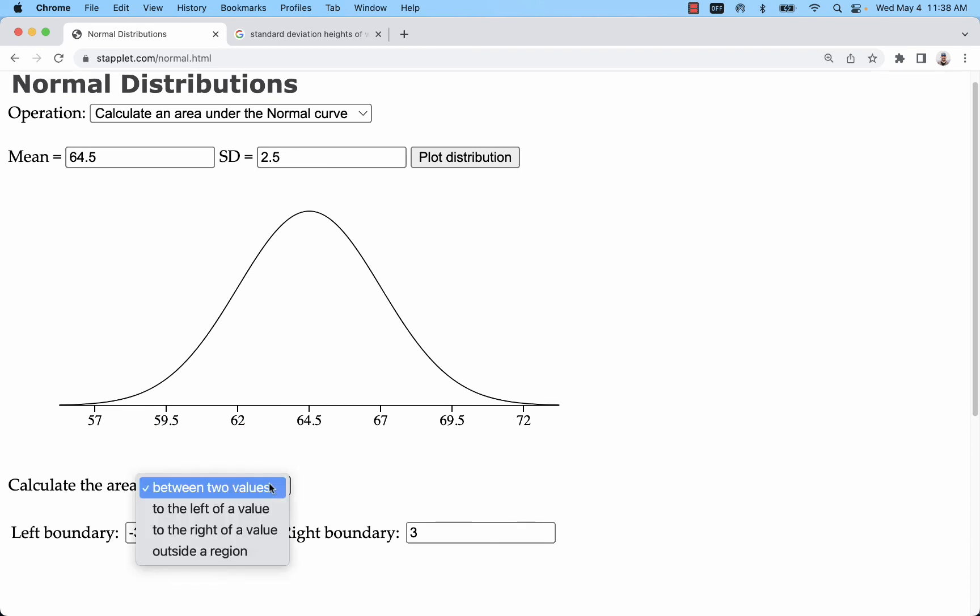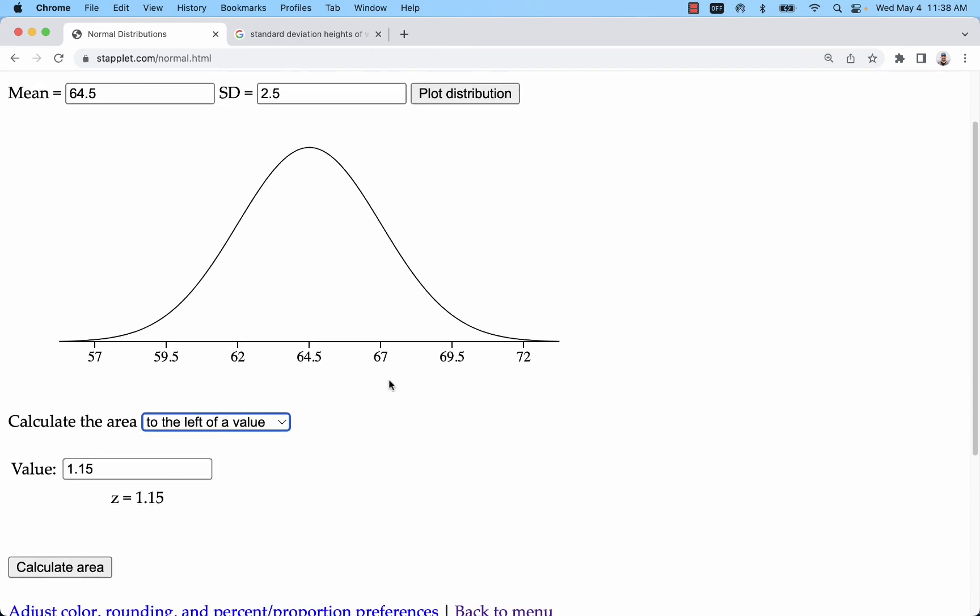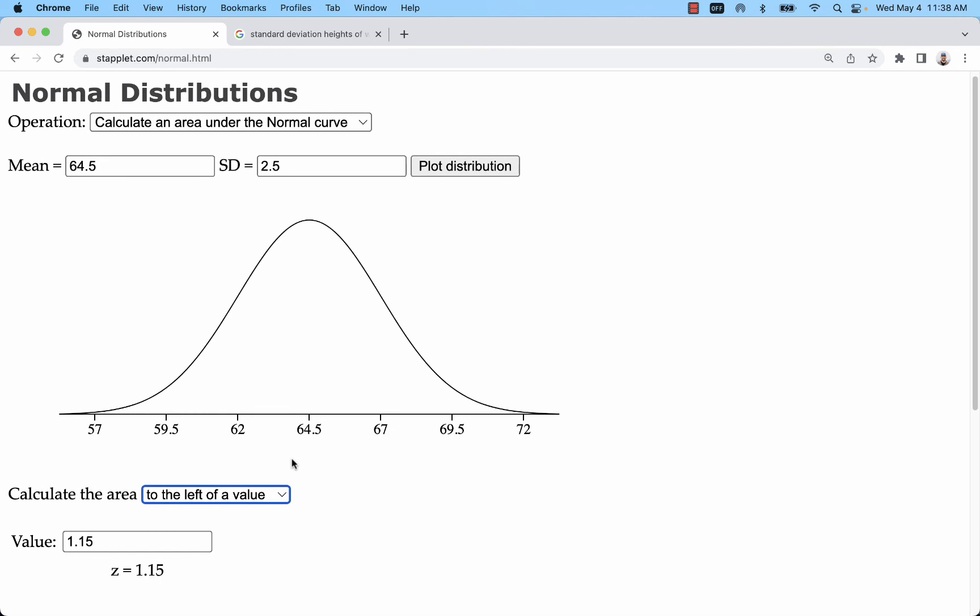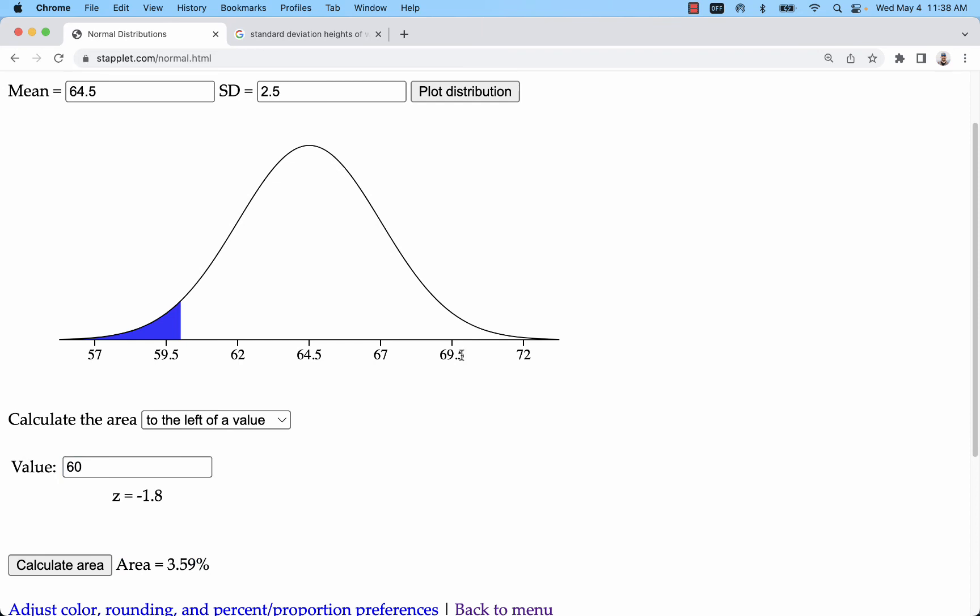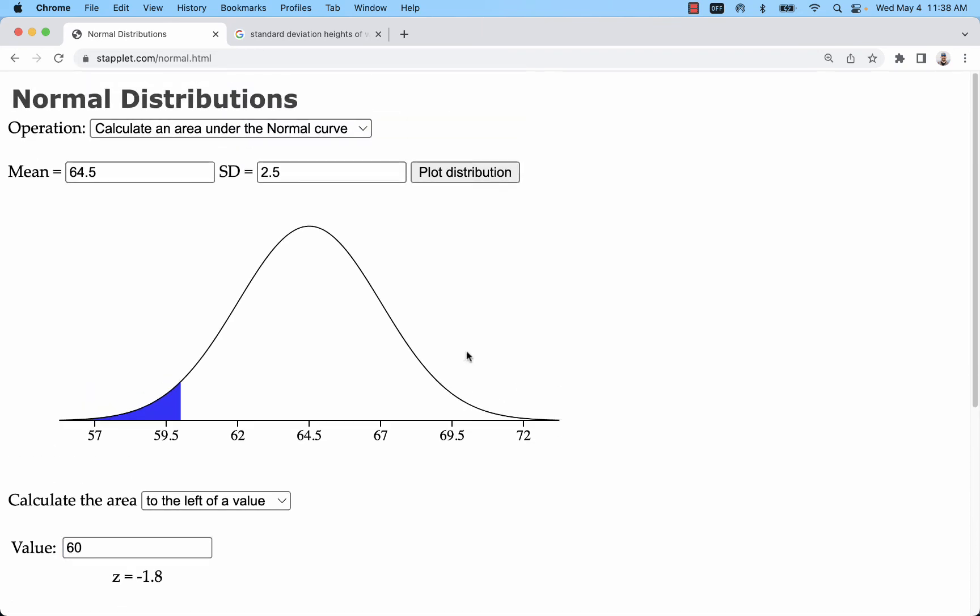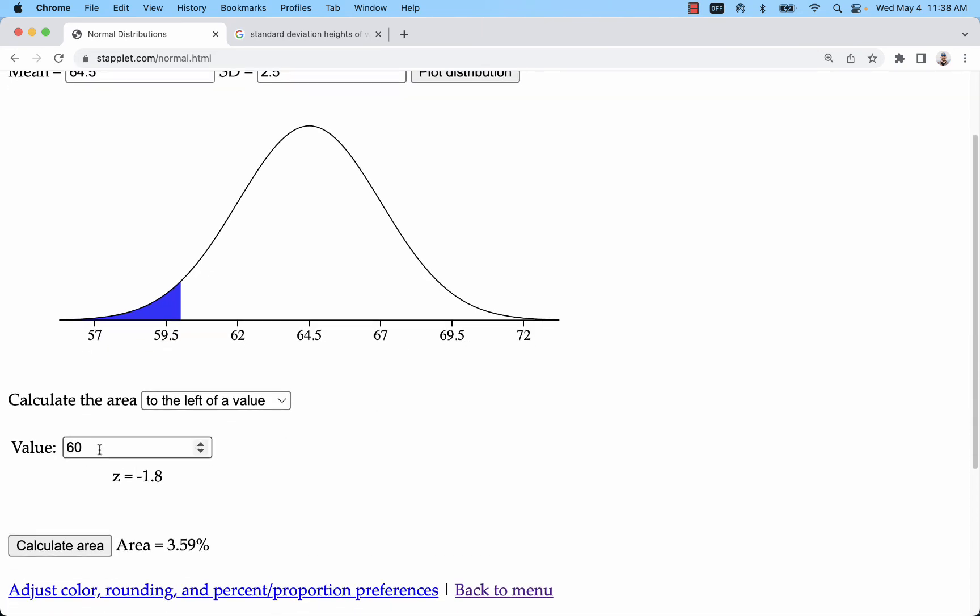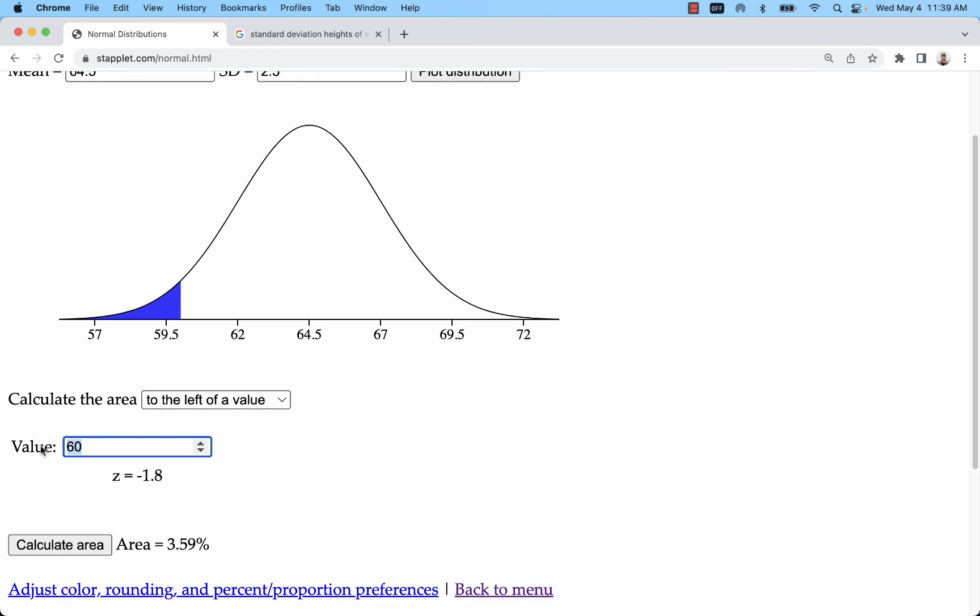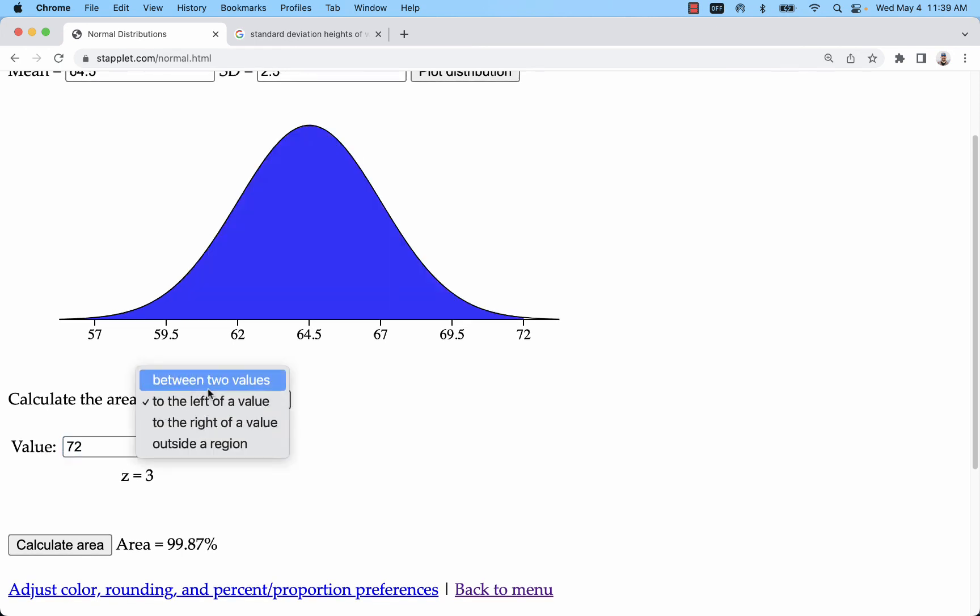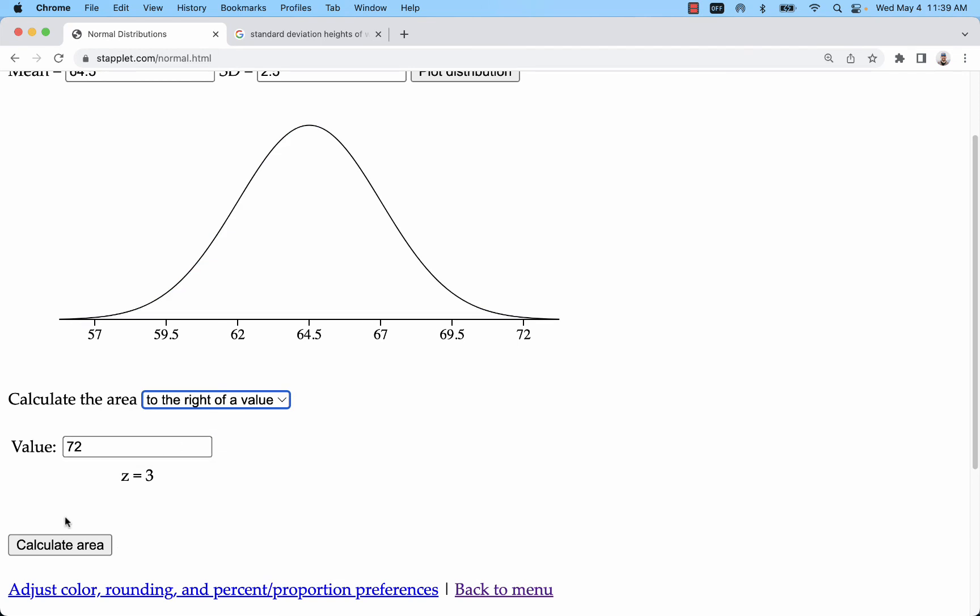Let's go to the left. So what's the probability of selecting someone at random who is less than 5 feet tall? That would be 60 inches. We see that here, about 3.59%. You can go higher than 72. That's another example.